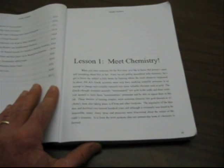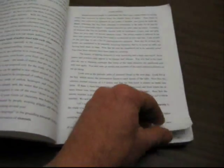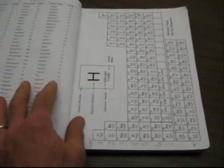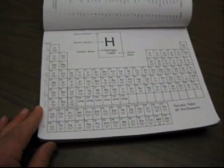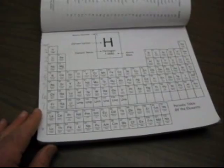In lesson one of Friendly Chemistry, you'll introduce the names of the elements and their symbols. An activity you can do with your students to allow them time to practice the many names and symbols of the elements is to play Element Bingo.